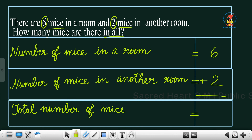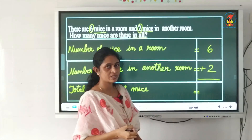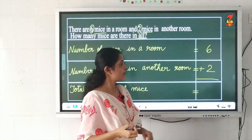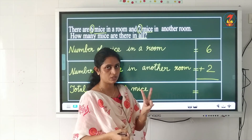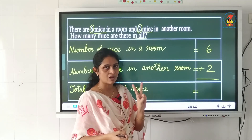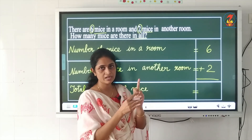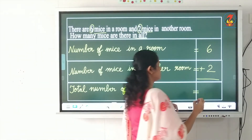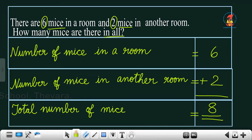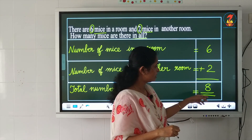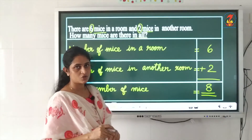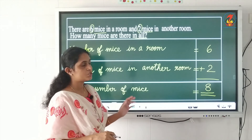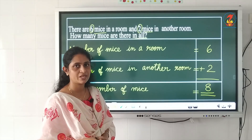What is 6 plus 2? The bigger number is 6 and the smaller is 2. So 6 in your mind and 2 in your fingers. Count after 6: 7, 8. Write the answer 8 and draw two lines. Similar questions will be in your worksheet. Try to write the answers by yourself. Thank you.